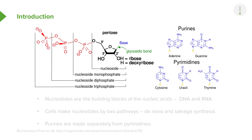Those phosphates can be single, double, or triple. The bases are distinguished by their size. The purines — adenine and guanine — have a two-ring system, and the pyrimidines — cytosine, uracil, and thymine — have a single ring, a simpler structure.